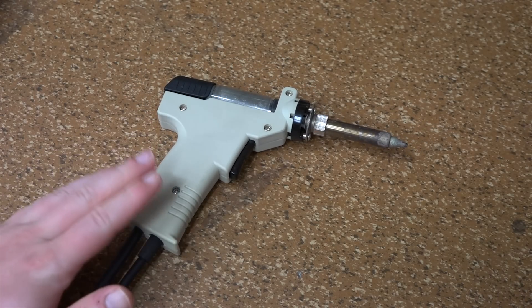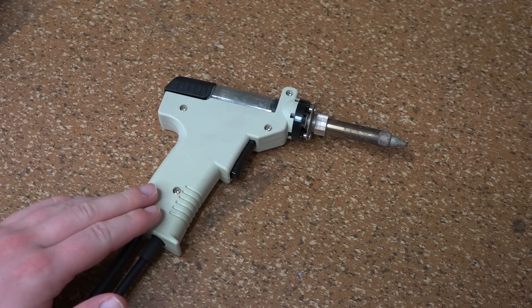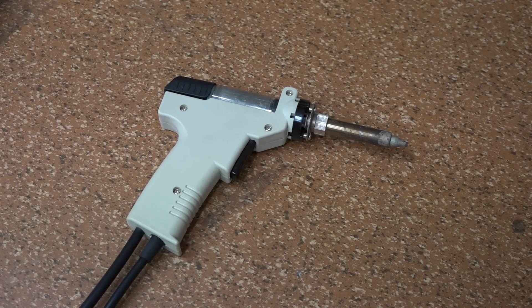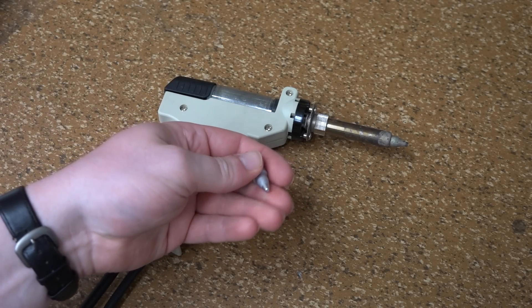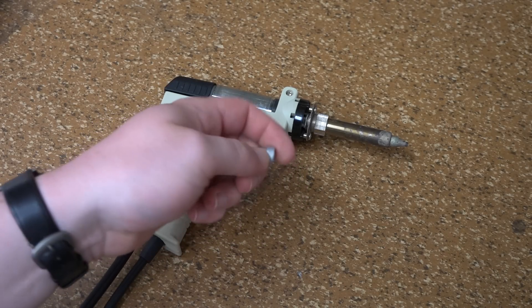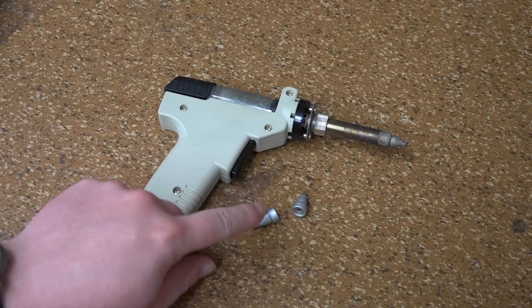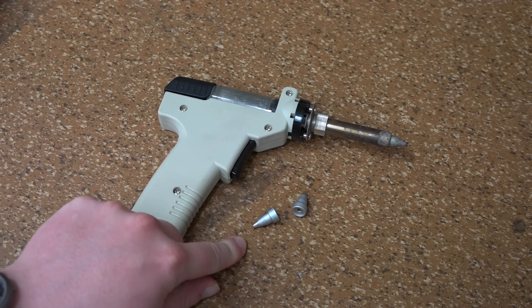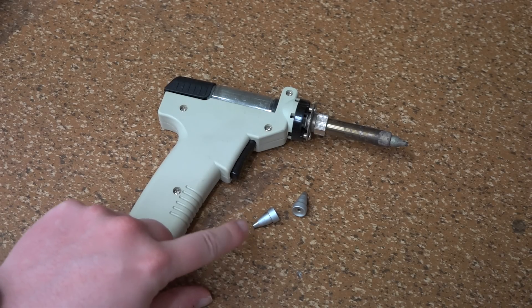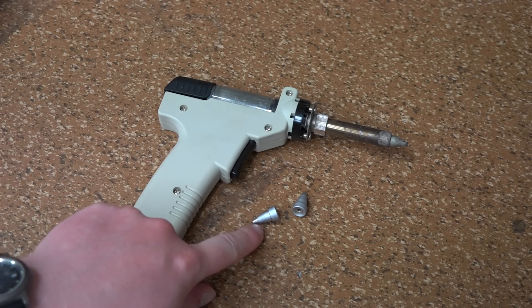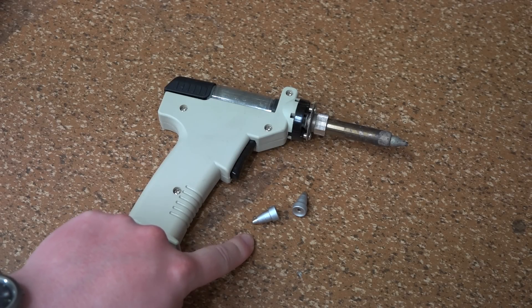So, along with the desoldering station, you not only get the instruction manual, you also get a set of two replacement tips. These are all the same size, from what I can tell, and you can get more of these, again, on eBay. They cost about eight euro. That's a set of three of these tips, and I think those are different sizes.